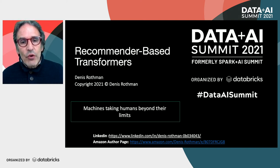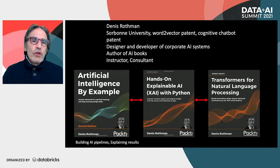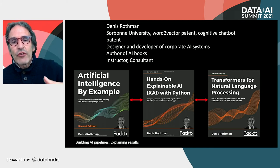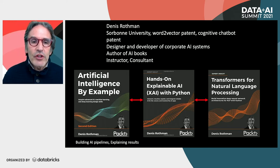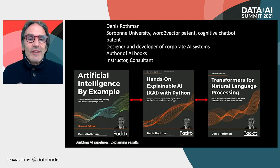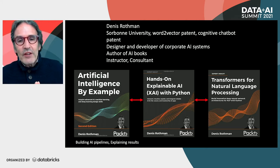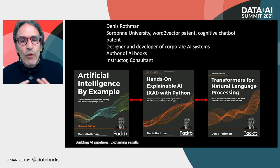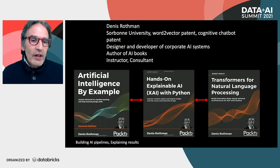Optimal transport is the key concept to keep in mind — it's both a horizontal concept I just described and a vertical one in artificial intelligence, giving you a whole new vision. I went to Sorbonne University, registered a word-to-vector patent, registered a cognitive chat patent, and have worked for corporations in AI for decades.